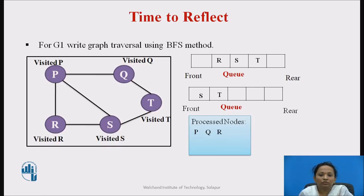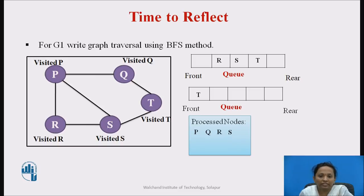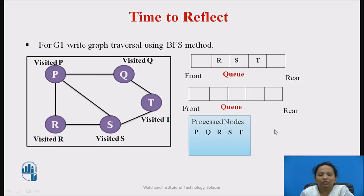We dequeue S, mark it as processed. The neighboring nodes of S are P, R, and T; P and R are already processed and T is in waiting, so no further nodes are enqueued. Next, we check: is the queue empty? No, T is still there. We dequeue T, mark it as processed. The neighboring nodes of T are Q and S, both already processed, so no further nodes are enqueued. Now the queue is empty, so we stop. The graph traversal sequence is: P, Q, R, S, T.